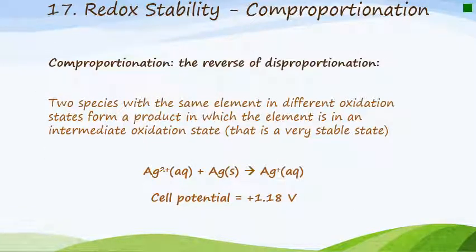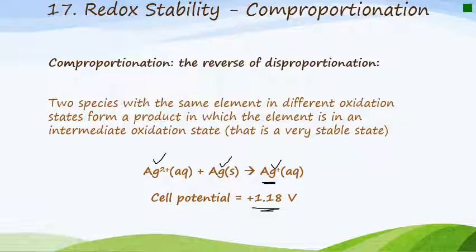There is one more reaction to look at, called comproportionation. Comproportionation is simply the reverse of disproportionation: it's where two species with the same element in different oxidation states form a product in which the element is in an intermediate oxidation state — one that is very stable. A classic example is silver: silver two plus reacts with silver solid to give silver one plus, the stable form. The cell potential is very positive at plus 1.18 V, and the delta G value will be very negative as well. That concludes this section.